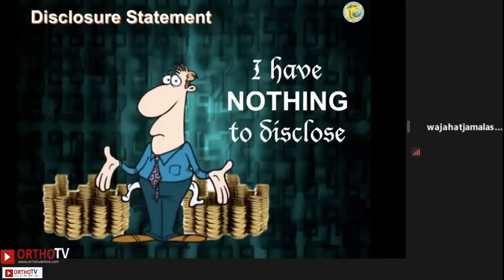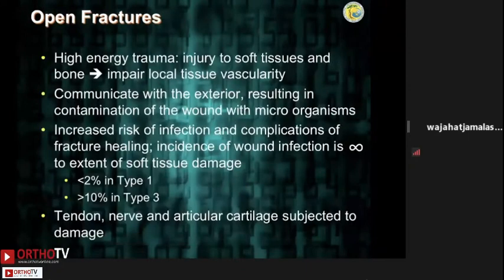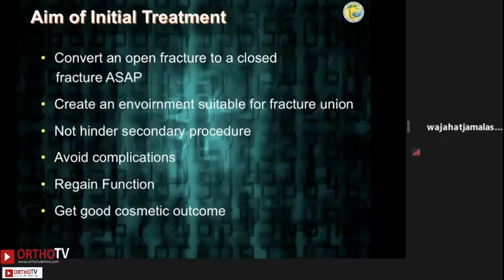When talking about open fractures, it suffices to say that the rate of infection is directly proportional to the extent of the soft tissue damage. International literature shows that it's less than 1% for Type I injuries. So the aim of treatment is to prevent infection, and this is achieved by converting an open fracture to a closed fracture as soon as possible, providing a conducive environment for uneventful fracture healing and regaining good pre-injury status and function.